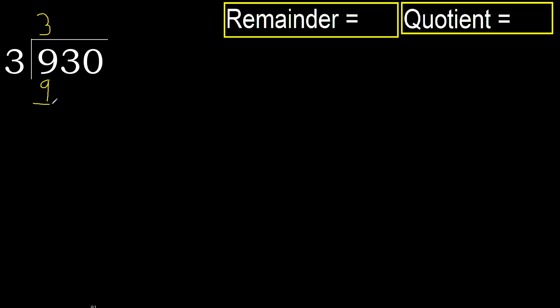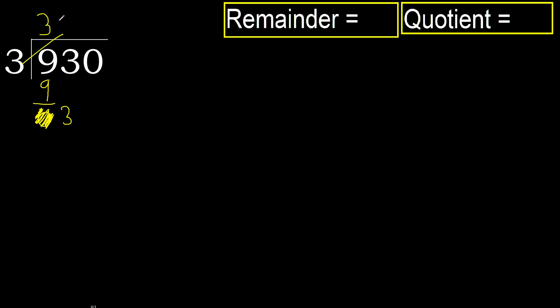Ok. 9 minus 9 is 0. Next, eliminate 0 on this side. Bring down 3.